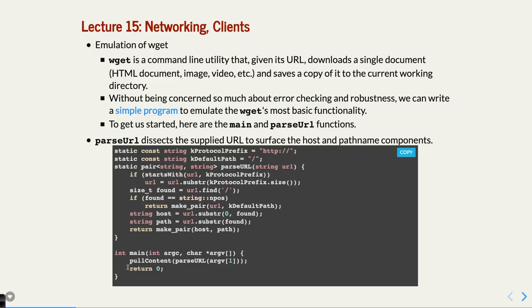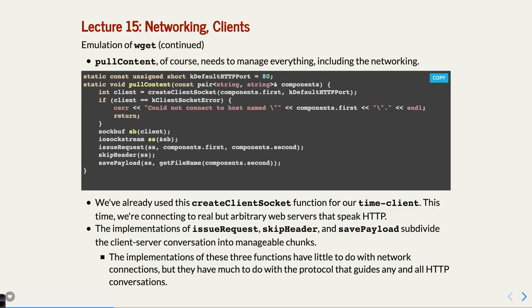The default path at the end of google.com is just slash — meaning there's no extra stuff after the website. The slash part is the default path. We'll see why that makes a difference for paths like slash class slash CS110, which is a shared website on the Stanford web service. The pullContent function sets up the actual client socket.